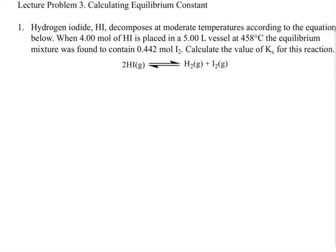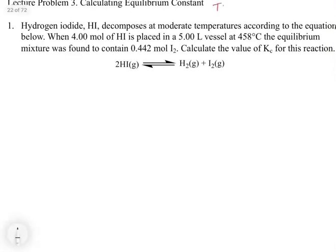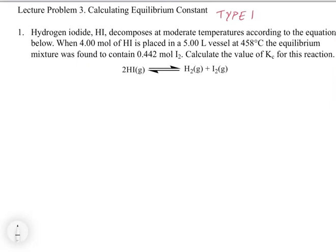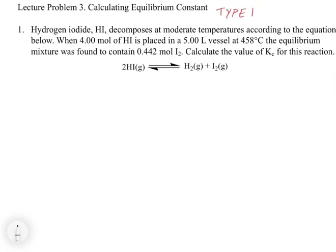The first one we're going to look at I call a type 1 problem. The reason I call it type 1 is because what we're calculating in this case is an equilibrium constant. We're going to separate the two main categories depending on what we're trying to calculate. In this video, we look at how to calculate the equilibrium constant. Type 2 problems are going to ask us for some kind of concentration at equilibrium. So type 1 focuses on the equilibrium constant, and type 2 focuses on some kind of concentration.